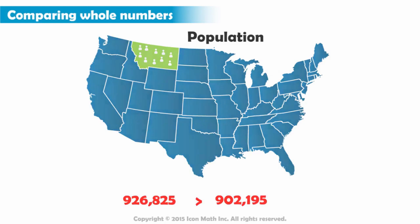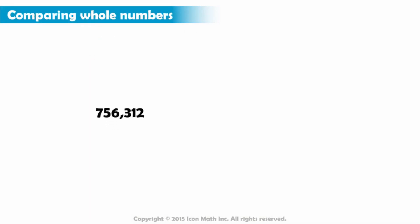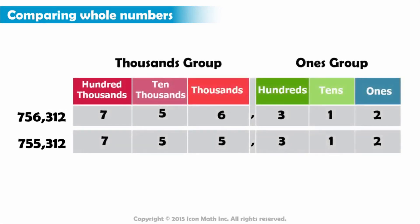Let us practice some more and compare the numbers 756,312 and 755,312. We insert the digits into the place value chart. We start by comparing the left-most digits, because they are in the highest place value, which is the hundred thousands place. And in both, there is a seven.